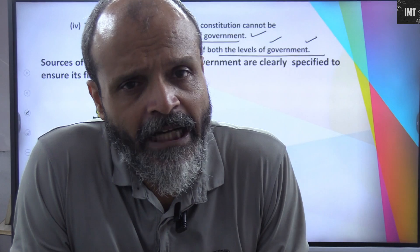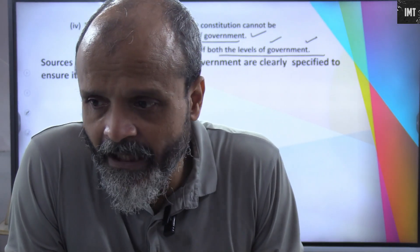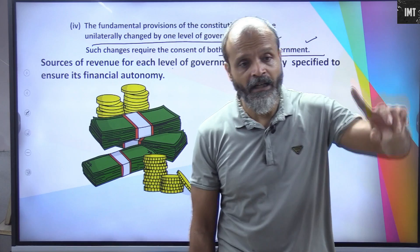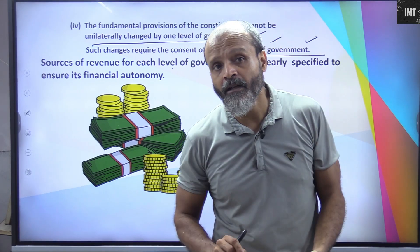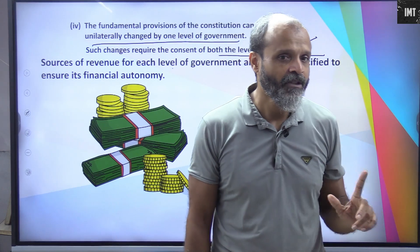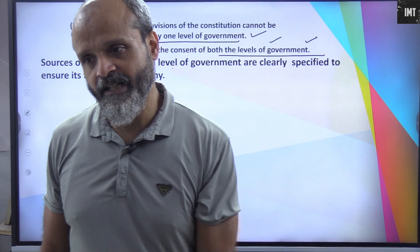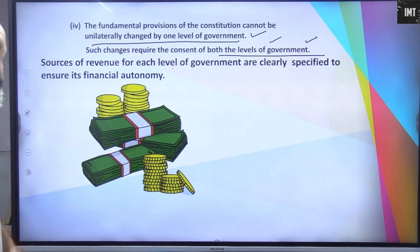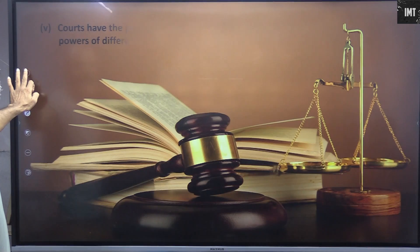For example, GST is applicable at the central level. At the state level, petrol has VAT. When you purchase a property, you have to pay registration charges — that registration is a state-level tax. Property tax papers also come to your homes, which is also a state tax. So state taxes and central-level taxes are both different. Sources of revenue for each level of government are clearly specified to ensure financial autonomy.